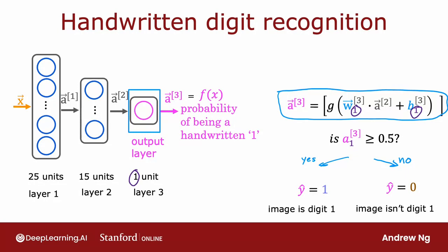Because this computation goes from left to right, you start from x, then compute a1, then a2, then a3. This algorithm is also called forward propagation, because you're propagating the activations of the neurons, so you're making these computations in the forward direction from left to right.